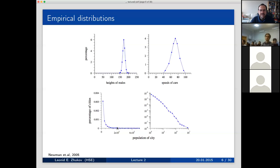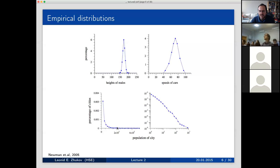If human height were distributed the same way as city populations, we would see people of 4, 5, or 10 meters tall — or centimeters — which we do not see. It's clear that human height and city population are driven by very different statistical processes leading to very different distributions.